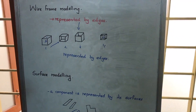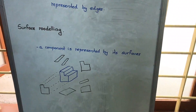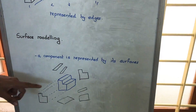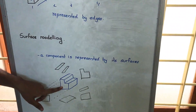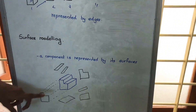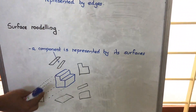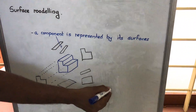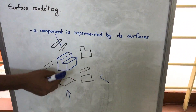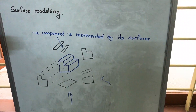In surface modeling, the component is represented by surfaces, or developed as a combination of surfaces. Even though we have a 3D model, we represent or construct it using surfaces. When viewed from the top, we have two surfaces; from the front, two more surfaces; and from below, another view. These views are combined together to get the exact solid model — that is what we do in surface modeling.